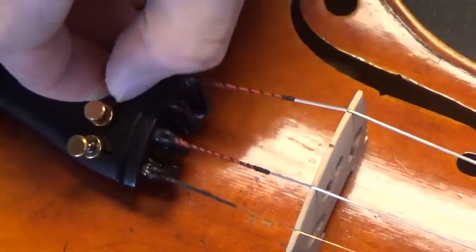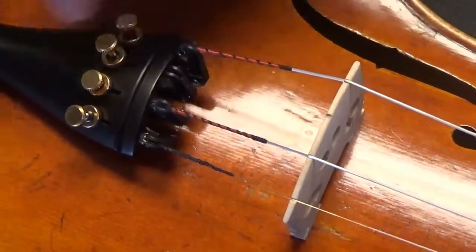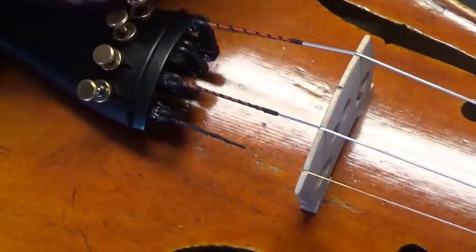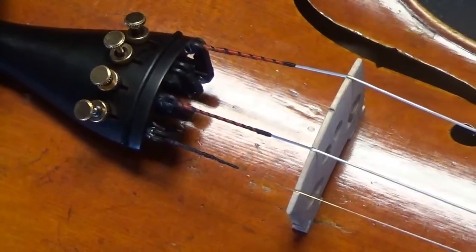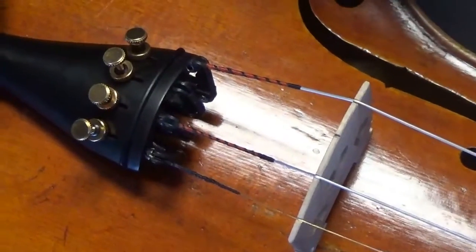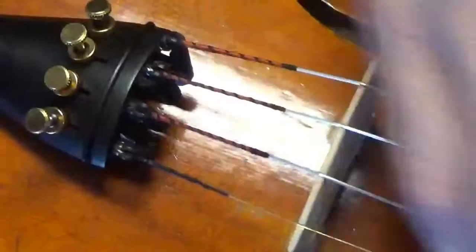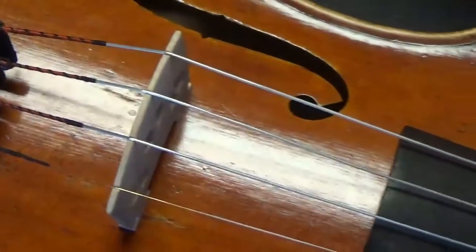Today we're just going to replace the D string. Make sure the base of the fine tuner is tight, then back the tuner mechanism out. First thing you're going to do is take the ball end of the string, if you have ball ends, put it in the fine tuner and keep it taut. Try to keep this part tight.